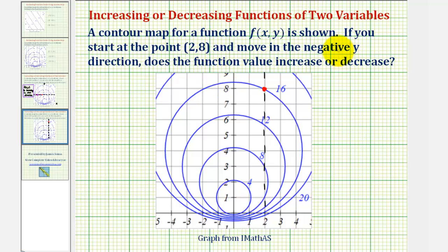But because we're moving in the negative y direction, we'd be moving downward from this point, or in this direction here. And notice how as we move in this direction, the function values are getting smaller or decreasing. We're starting at a function value of 16, from here it would be 12, here it would be eight, and so on. So we can say f of x comma y is decreasing in this direction.